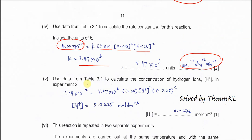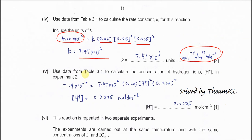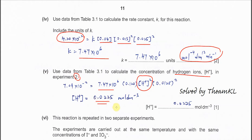Part 5: use the data in table 3.1 to calculate the concentration of hydrogen ion in experiment 2. After obtaining k, substitute all known values from experiment 2 into the rate equation and solve — you should get [H⁺] = 0.0225 mol dm⁻³.